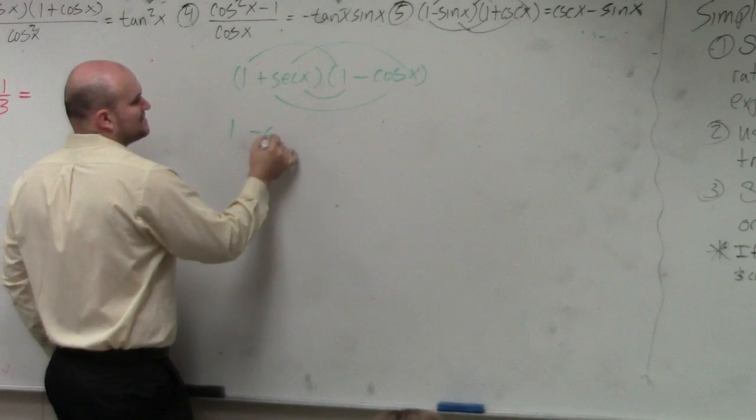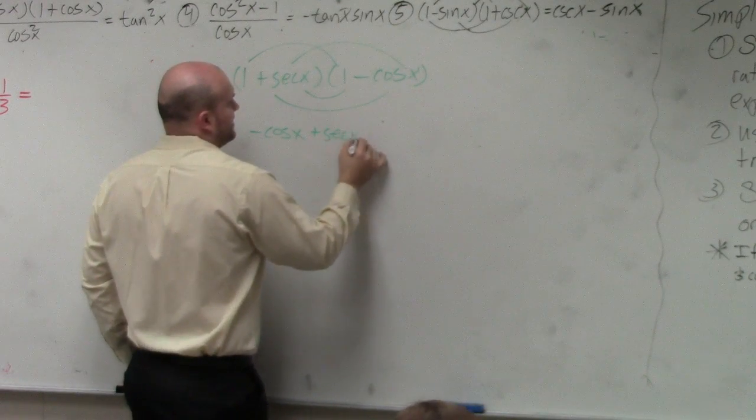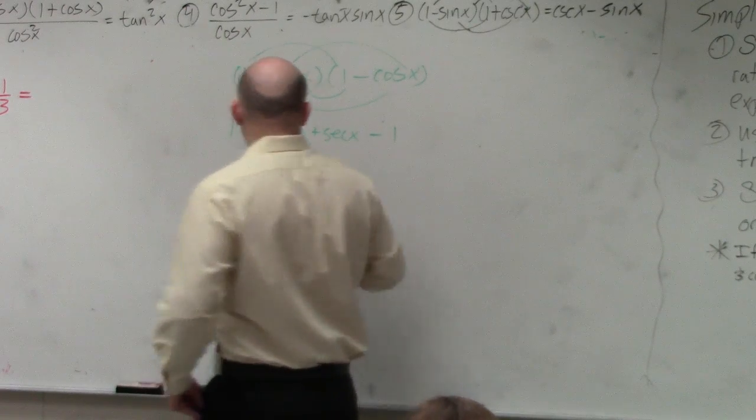1 times 1 is 1 times negative cosine of x plus secant of x. And therefore, this becomes negative 1.